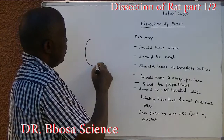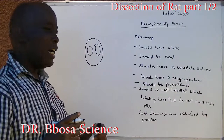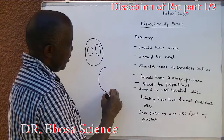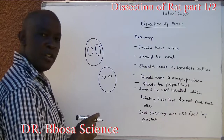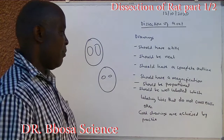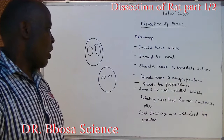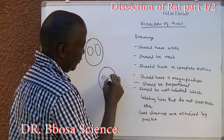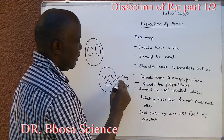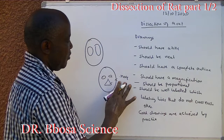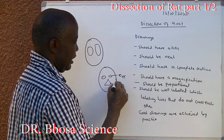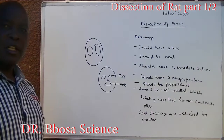For instance, when you draw the head and put the eyes, if the eyes are too big compared to the head, that is not proportional. Proportional eyes should be drawn to match the head size. The drawing should also be well labeled with labeling lines that do not cross one another. For example, when labeling the eye and then the nose, labeling lines should not cross one another.